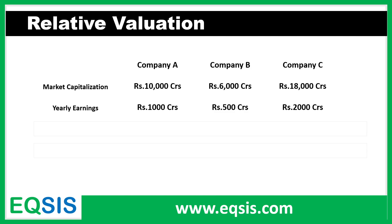If you look at Company C, its earnings is 2,000 crores. Naturally, it deserves 20,000 crores if you use Company A as the benchmark, but it's actually getting only 18,000 crores. So mere earnings won't tell us if a company is good, overvalued, or undervalued, and mere market capitalization won't tell us either. We need a combination factor — that's what's called the P/E ratio.